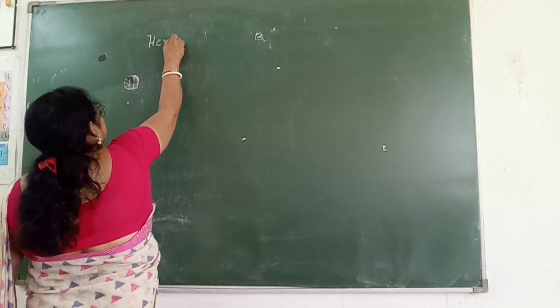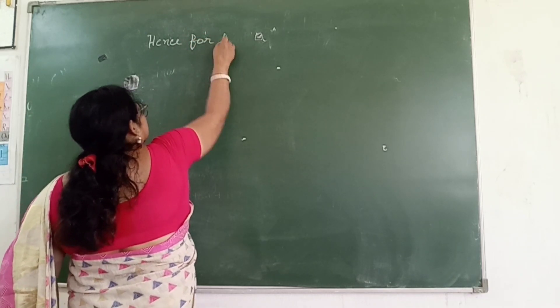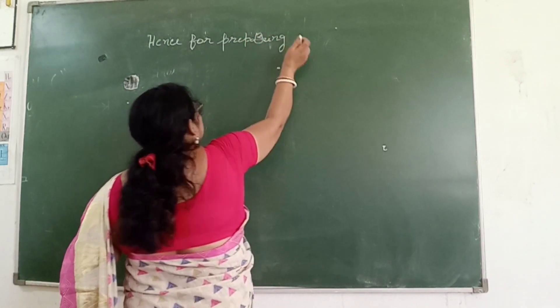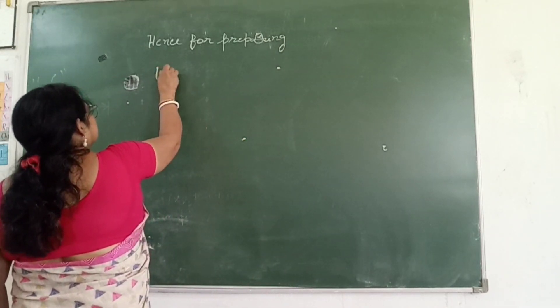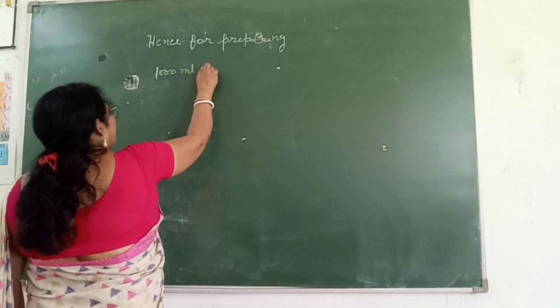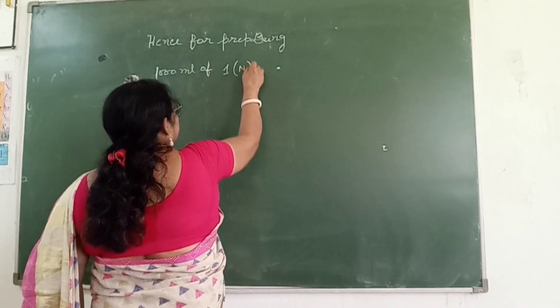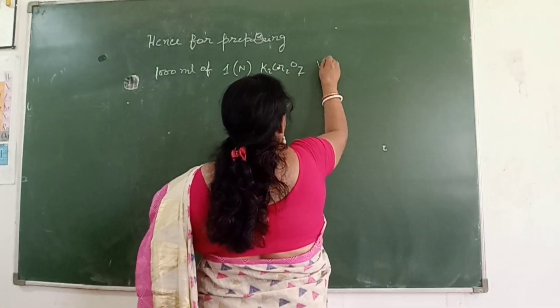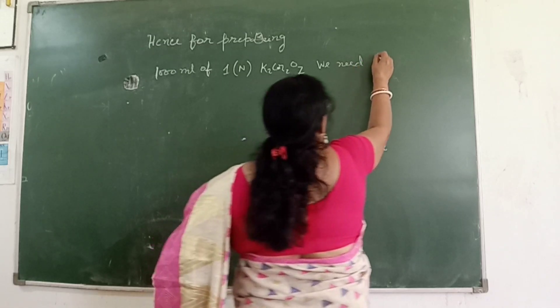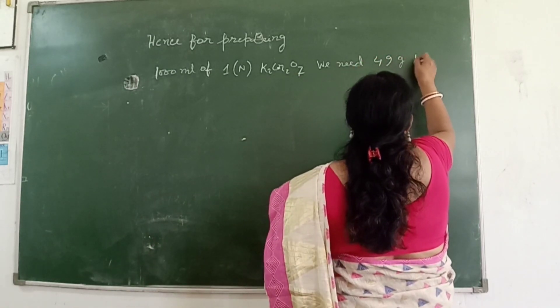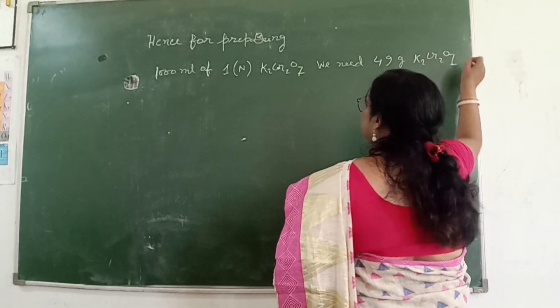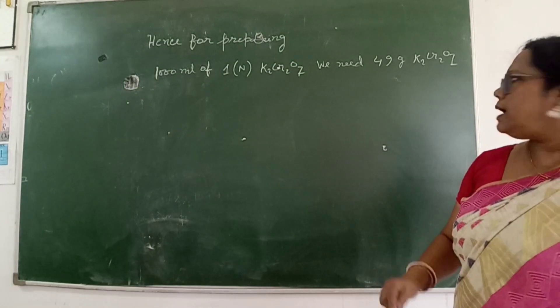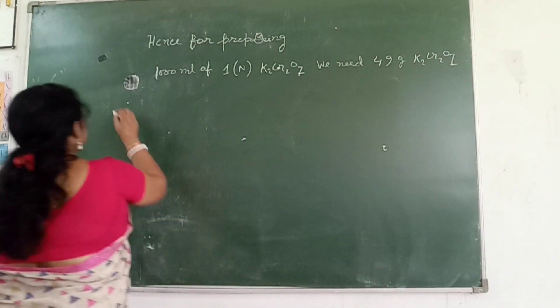Hence, for preparing 1000 ml of 1 normal potassium dichromate, we need 49 gram K2Cr2O7 crystals.